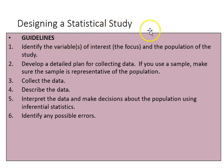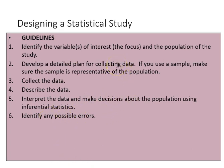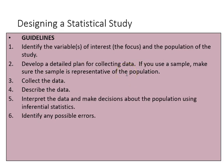The guidelines of experimental research include the following. We need to identify the variables of interest in the population that we're wishing to study, and we have to define both very clearly and specifically. Two, we need to develop a plan for collecting data. Will we be asking people to fill out a questionnaire? Will we be observing particular behaviors? If you use a sample, we have to make sure that it's representative of the population if we wish to make inferences, and that's usually a desirable quality of research.